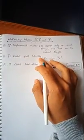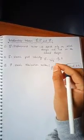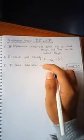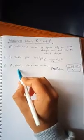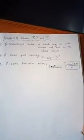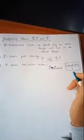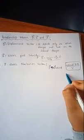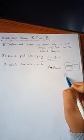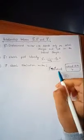Electric field intensity E is defined as the force experienced by a unit positive charge when placed in the electric field. The electric field intensity and its field expression are given accordingly. Electric polarization vector P is defined as the induced dipole moment per unit volume. If n is the number of dipoles per unit volume, then polarization can be written as n times the induced dipole moment.